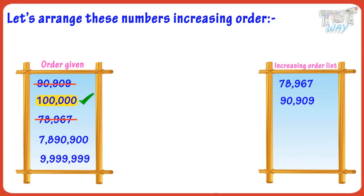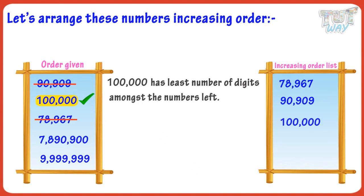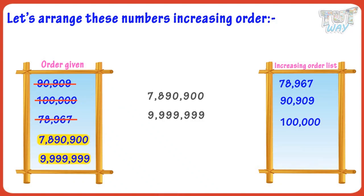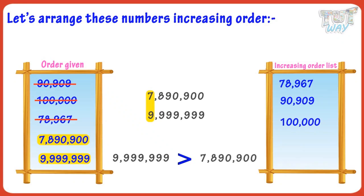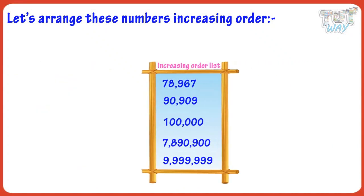Now, 100,000 has the least number of digits among the numbers left, so place it next and cross it from the list. The remaining numbers have the same number of digits, so compare them. Comparing their first digits from the left — 9 and 7 — we get that 9,999,999 goes to the last place, and 7,890,900 goes to the second-to-last place. Our increasing order is complete — the numbers are arranged from smallest to biggest.